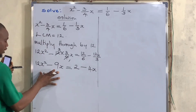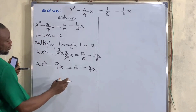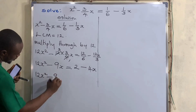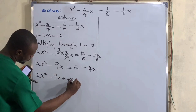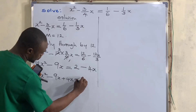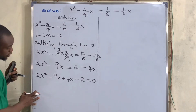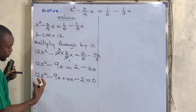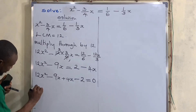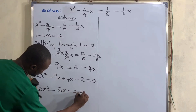Now we have the left-hand side as 12x squared minus 9x and the right-hand side as 2 minus 4x. We take minus 4x to the left-hand side giving 12x squared minus 9x plus 4x, and we take 2 to the left-hand side giving minus 2, with 0 on the right. The middle terms combine: minus 9 plus 4 gives minus 5, so we have 12x squared minus 5x minus 2 equals 0.